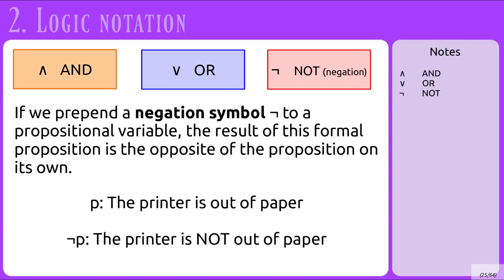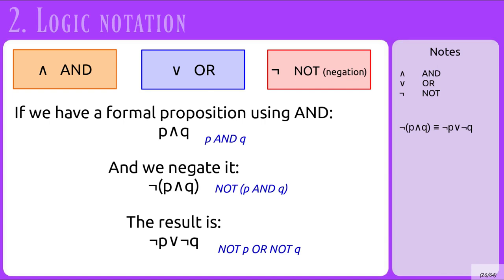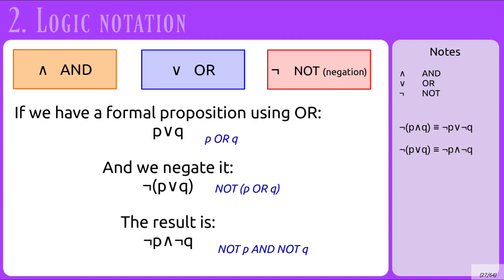If we prepend a negation symbol to a propositional variable, the result is the opposite of the proposition on its own. So P is 'the printer is out of paper,' and NOT P is 'the printer is NOT out of paper.' However, if we have a formal proposition P AND Q and we negate it — NOT(P AND Q) — then the result is NOT P OR NOT Q. Likewise, if we negate P OR Q — NOT(P OR Q) — then the result is NOT P AND NOT Q.